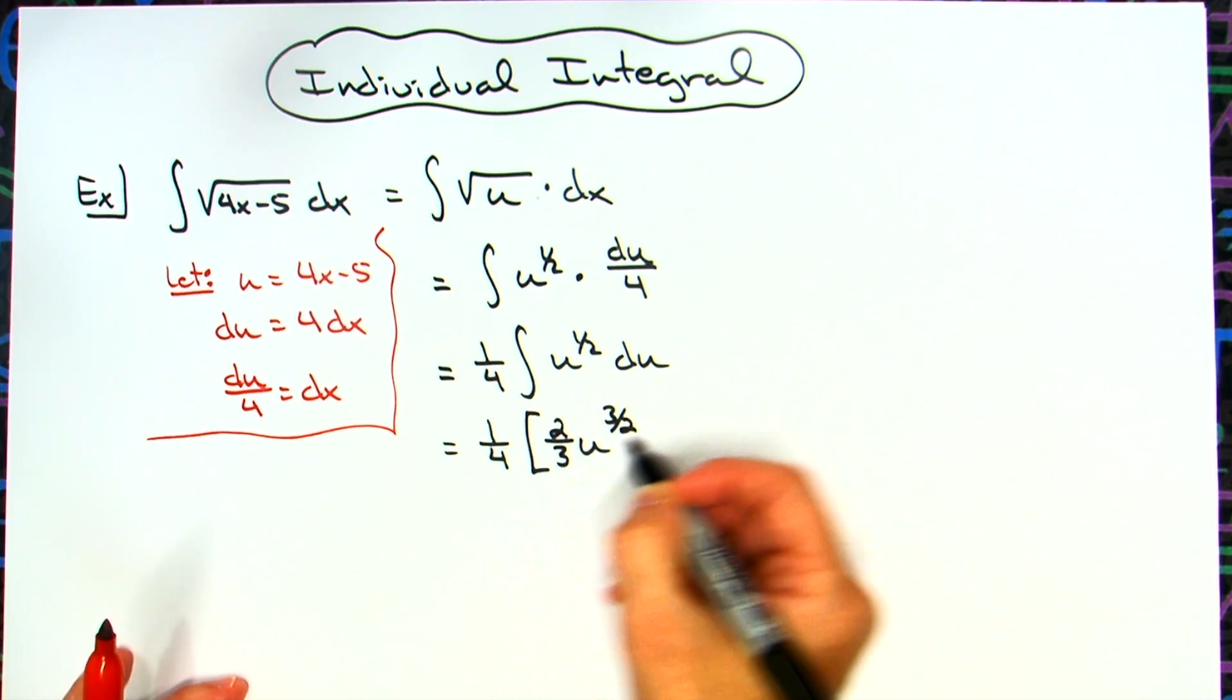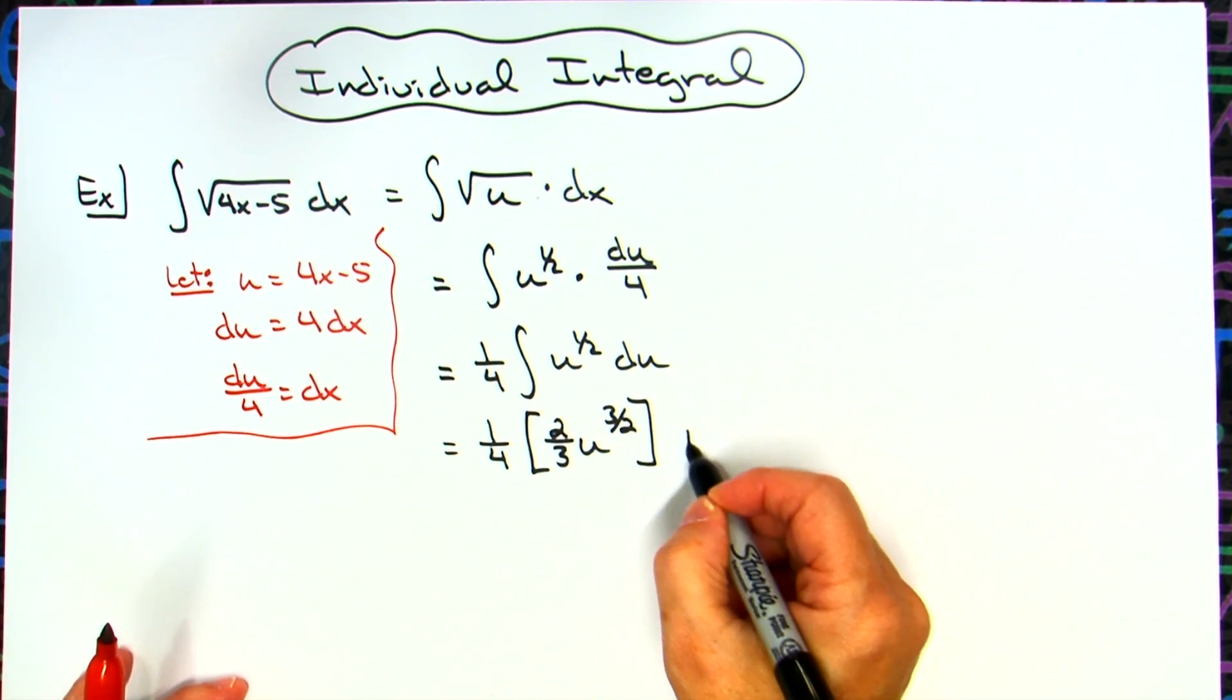And then in front, when we do that integration, we'll have a 2 thirds. We can go ahead and put the plus c on at that point.